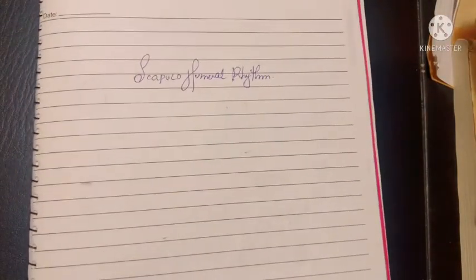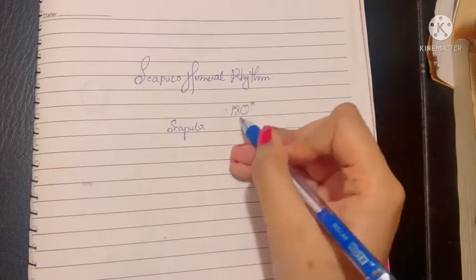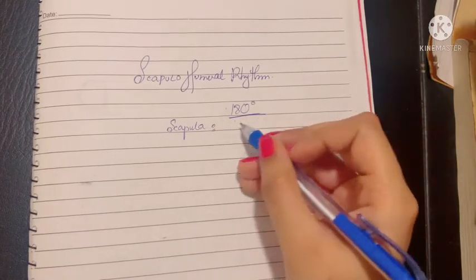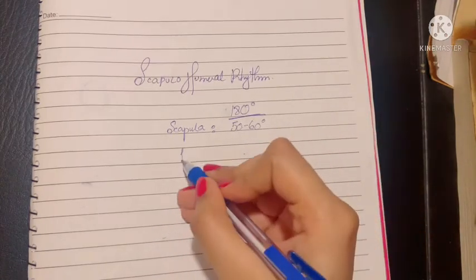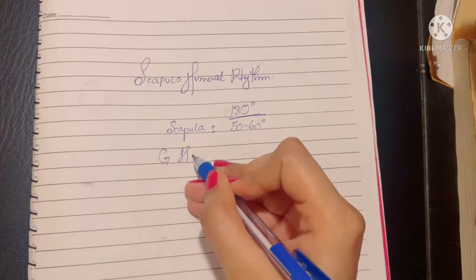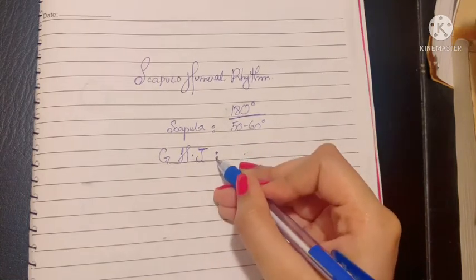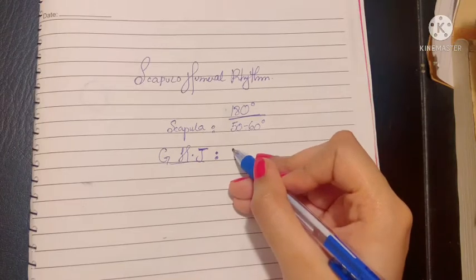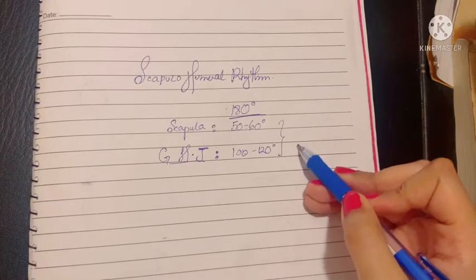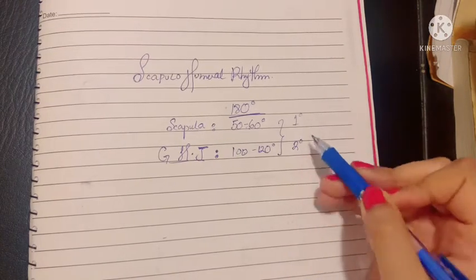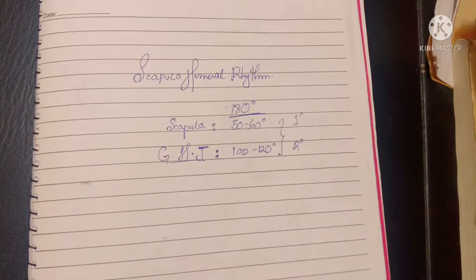So the scapulohumeral rhythm states that of the 180 degree movement, scapula takes part in the 180 degree motion till about 50 to 60 degrees while the humerus or the glenohumeral joint, which is basically the shoulder joint, contributes to the overhead movement more than this, which is about 100 to 120 degrees. Hence this becomes a ratio of two degrees motion to one degree motion, and that is what the scapulohumeral rhythm states. It states that the overall ratio of two degrees motion of shoulder to one degree of scapulothoracic motion is referred to as scapulohumeral rhythm for the overhead movements of the shoulder joint.